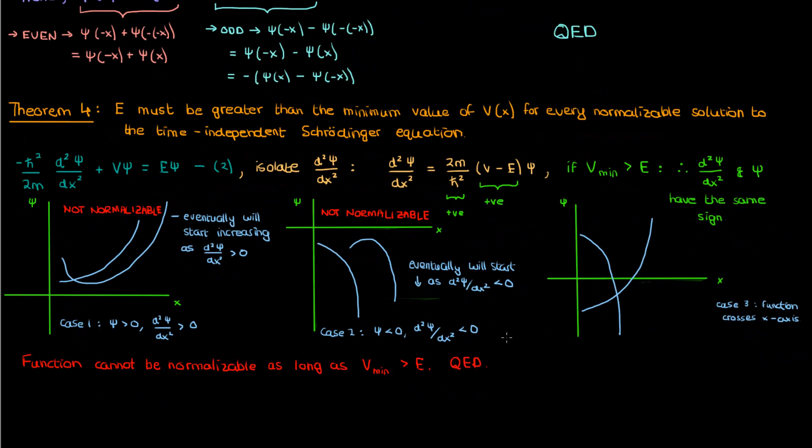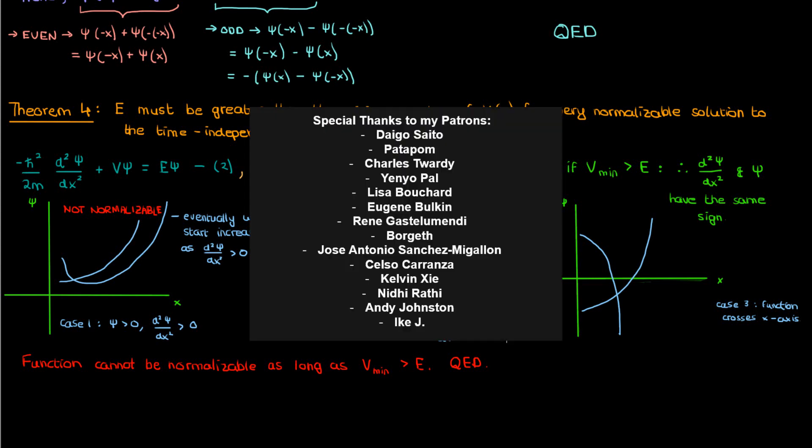That should do it for this video. In the next lesson, we're going to solve the time-independent Schrödinger equation for special cases, starting with the infinite square well. I'd like to thank the following patrons for supporting me at the $5 level or higher, and if you enjoyed the lesson, feel free to like and subscribe. This is the Faculty of Khan signing out.